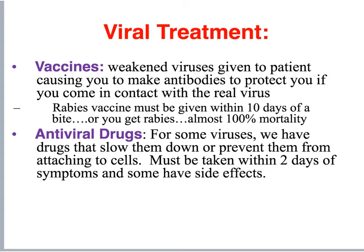A few different ways that we treat viruses: the main way is vaccines. A vaccine is a non-harmful, weakened — sometimes dead — form of the virus that causes an immune response. People do get sick from that immune response, but generally not from the weakened virus. We can also use antiviral drugs. For example, people living with HIV take antiviral drugs that help prevent the virus from expressing itself, giving them a better chance of surviving long-term, though the drugs are very expensive.